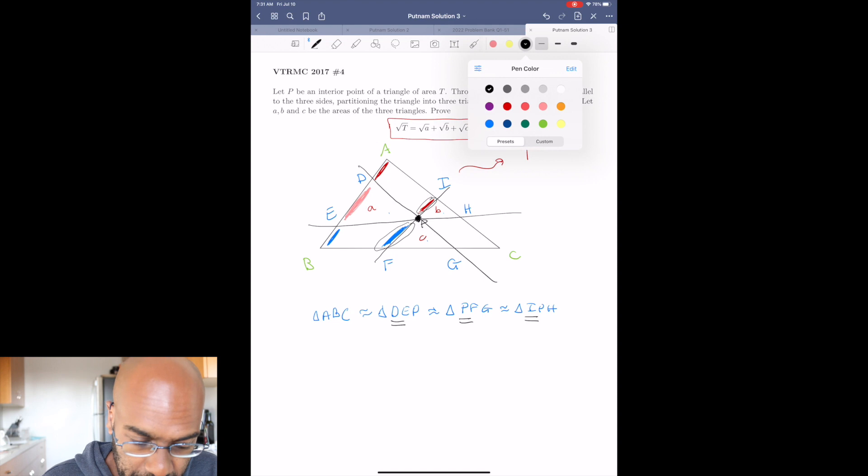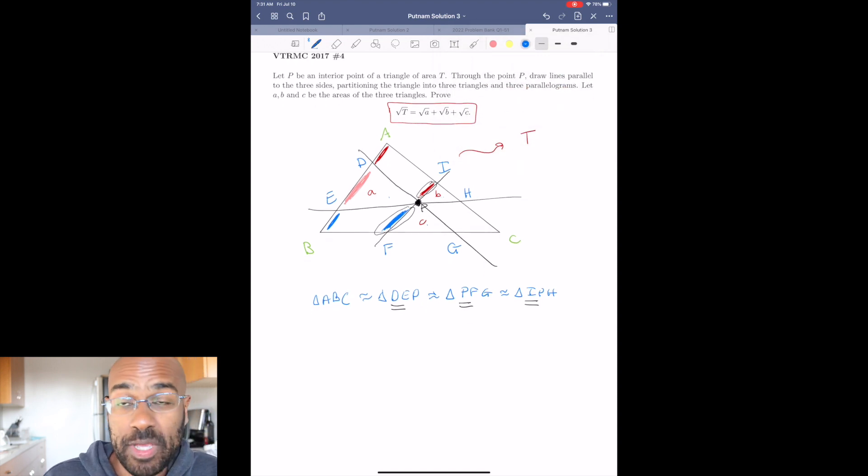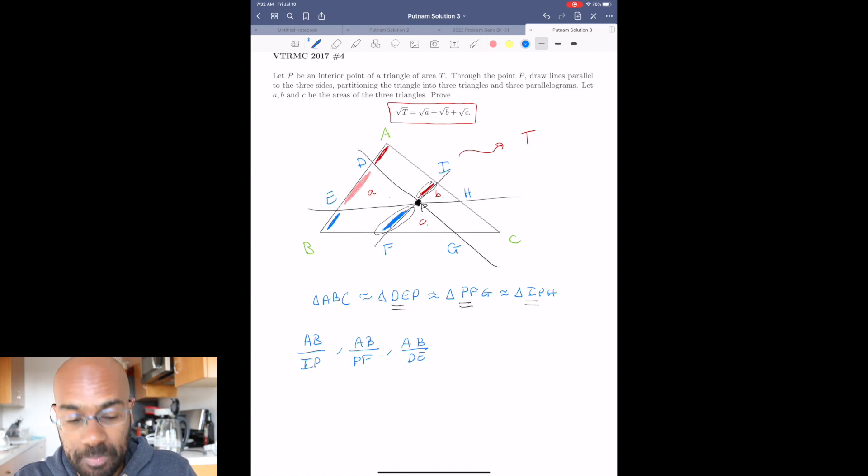So it makes sense then to try to relate side lengths here, mainly because we know something about ratios of side lengths. So for example, if you look at AB, we actually know the ratio of the length of AB to all of these sides, like IP, AB and PF, and AB and DE. And the reason we know these is because we know the relative areas and the triangles are similar from this statement.